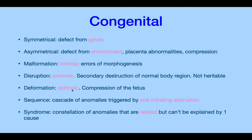Deformation is extrinsic and results from compression of the fetus — there's no actual destruction, just deformation of a normally developing structure. For example, a limb where all the signaling is correct but outside factors cause deformation. A sequence is a cascade triggered by one initiating aberration, whether genetic or environmental.